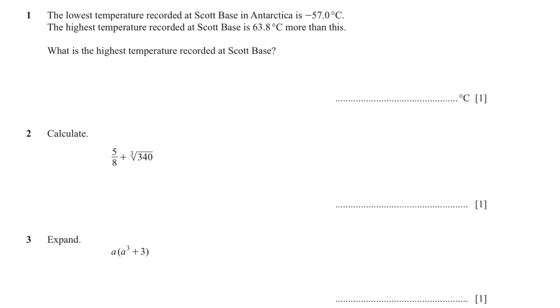The first question: the lowest temperature recorded is negative 57 degrees Celsius and the highest temperature recorded is 63.8 degrees more than this. So what is the highest temperature? We add 63.8 to negative 57 and the answer is 6.8 degrees.